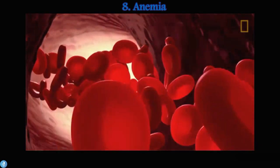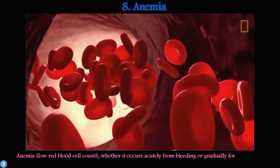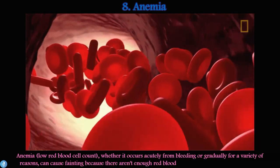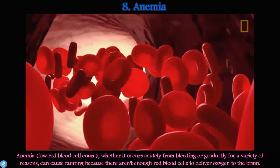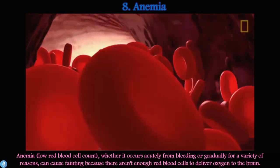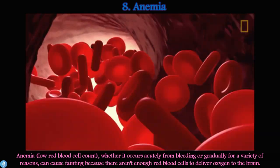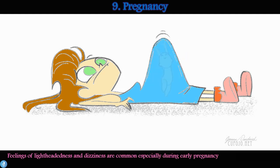Number eight is anemia, which refers to a low red blood cell count. Whether it occurs acutely from bleeding or gradually for a variety of reasons, anemia can cause fainting because there aren't enough red blood cells to deliver sufficient oxygen to the brain.